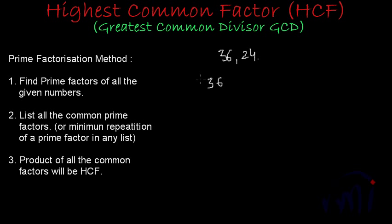How do we find the prime factors? We have to start from the smallest possible prime number and keep dividing this number. So we have 36 which is an even number,